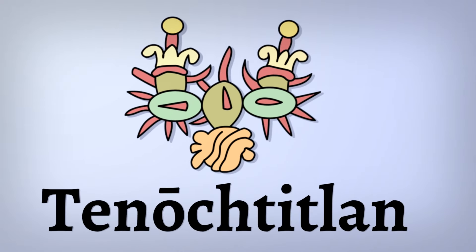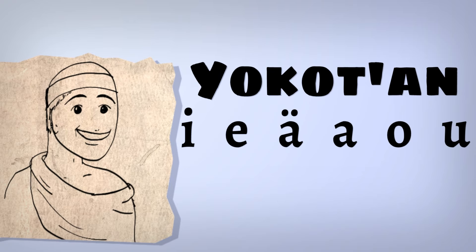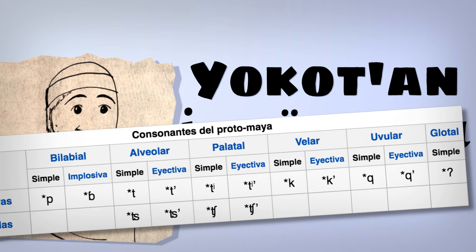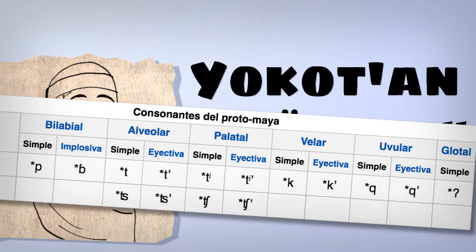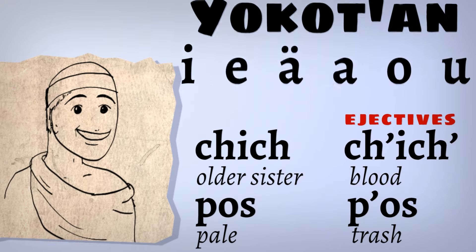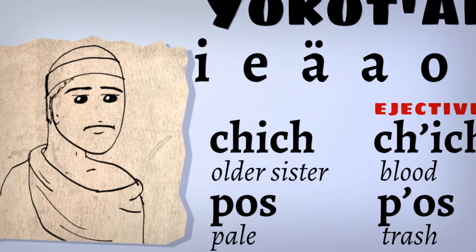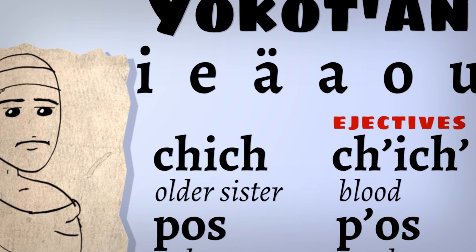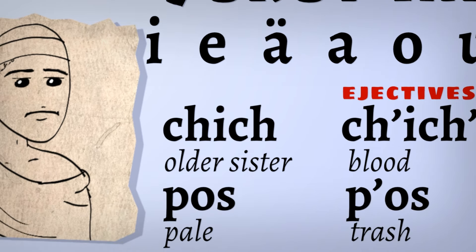Tenochtitlan. Yucatán, on the other hand, has six vowels, and its consonants include the ever-so-Mayan ejective stops that build up and release air pressure. Call them exotic, call them aggressive — personally I like them — but they're on full display in this Mayan language. Let me try this: 'chich' versus 'chich'. 'Pos' and 'pos'.